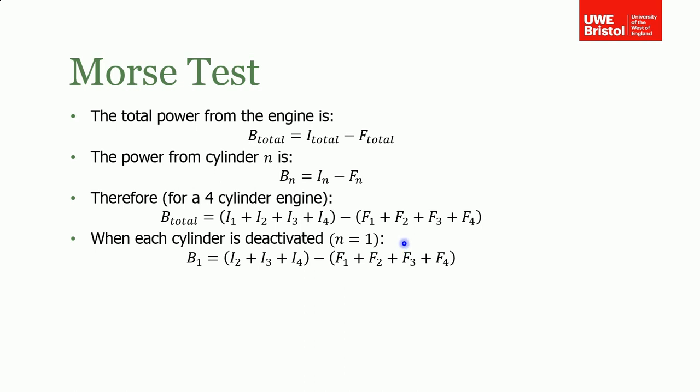We know from our results we've measured the power for when each cylinder was deactivated. So when we deactivated cylinder one, then the power that we measured for cylinder one was the indicated power from the remaining cylinders—so notice i2, three, and four, not i1—minus but we still got the friction losses from one and two and three and four. From this we can determine what the indicated power one is because if we subtract this from this, what are we left with? We're left with i1 because everything else cancels.